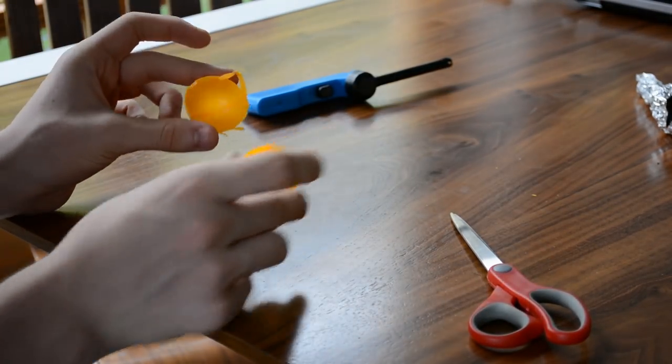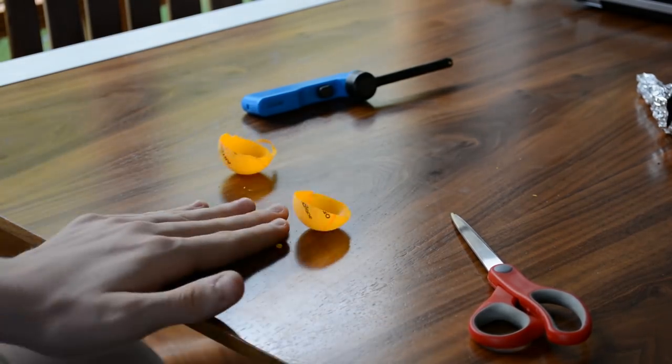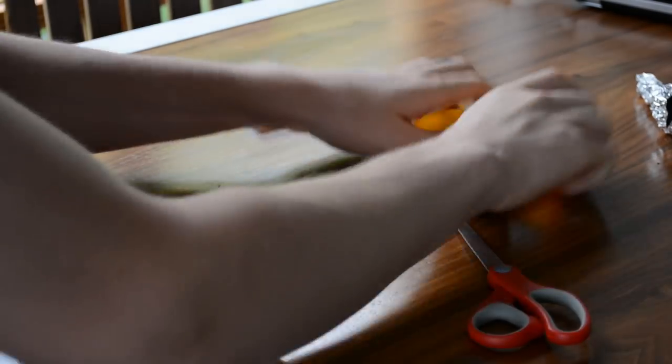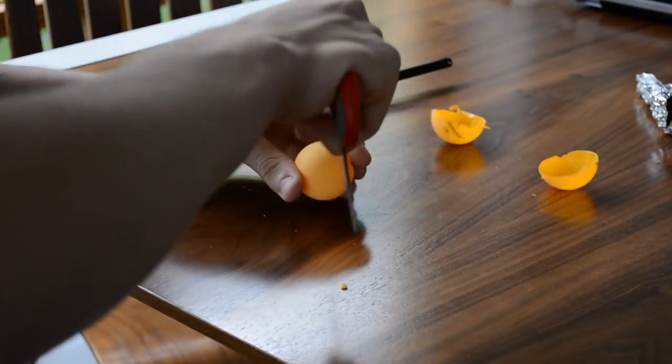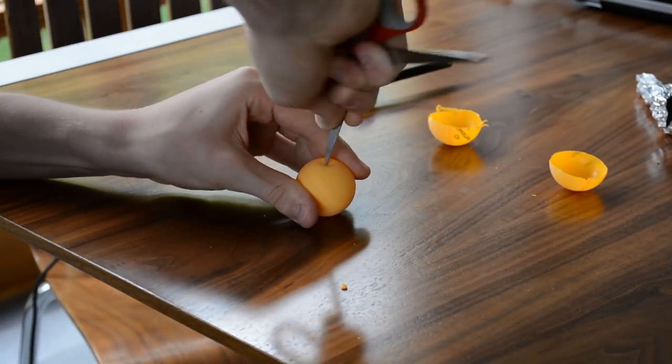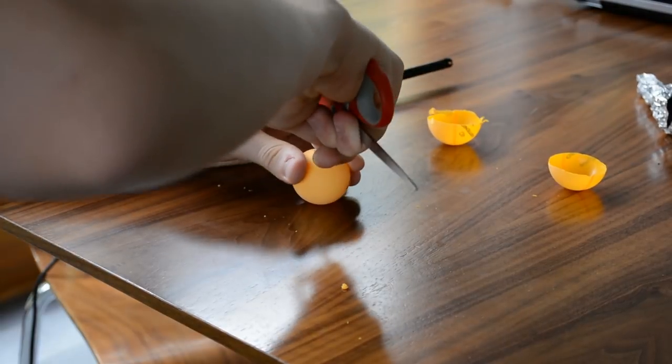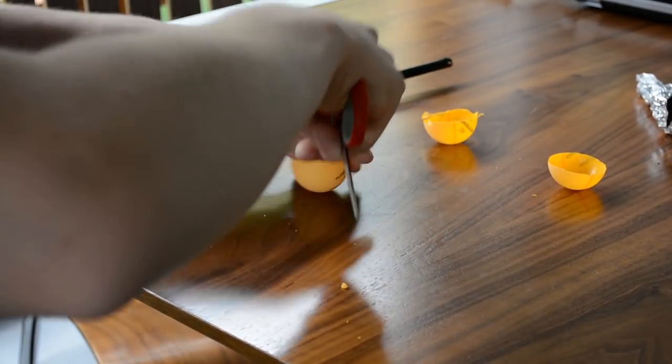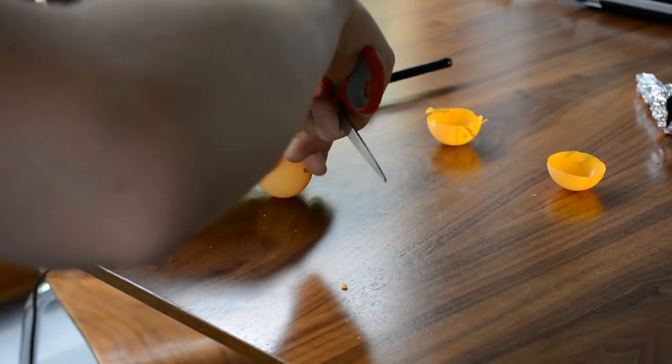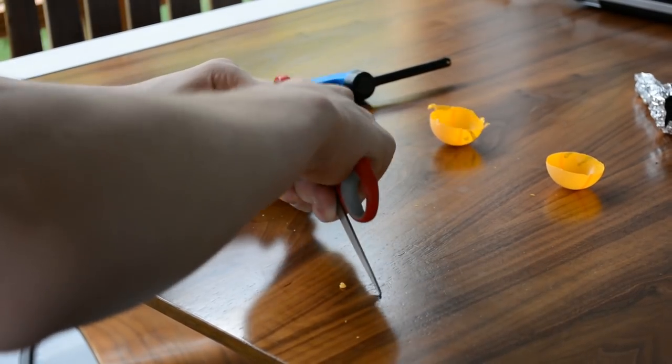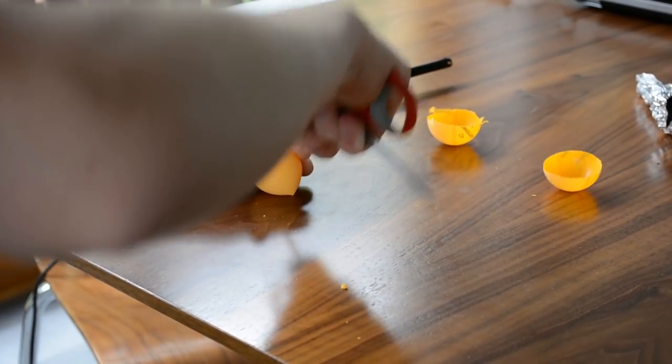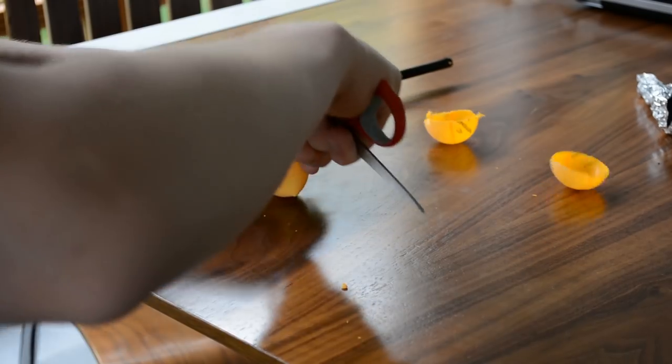Now, it doesn't have to be perfect. As you can see this is not perfect at all but I do have two halves. Then I'm going to do the same to the other one. Skip the video if you don't want to watch me cut these. I'm going to use this method to show you how it works as well. It's a little more effective. Just keep cutting them.